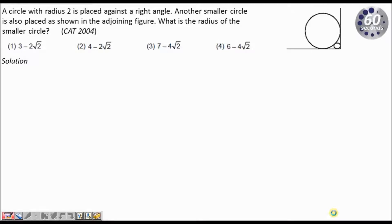Hi, this is Prakash from 60 seconds. Today we look at a question from geometry which occurred in CAT 2004. The question goes like this: a circle with radius 2 is placed against a right angle. Another smaller circle is also placed as shown in the adjoining figure. This is the circle of 2 units and there is a smaller circle placed adjacent to it. What is the radius of the smaller circle?